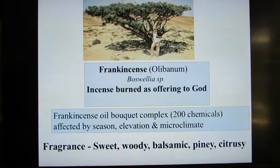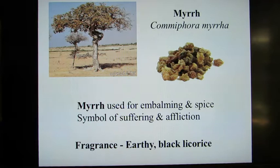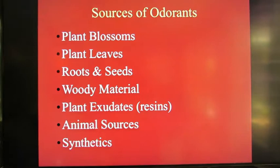Myrrh is similarly obtained from solidified resin, which looks similar to frankincense resin. Myrrh was used for embalming and as a spice, and was also a symbol of suffering and affliction in ancient times. Its fragrance is distinct from frankincense — it has an earthy, black licorice type of aroma.